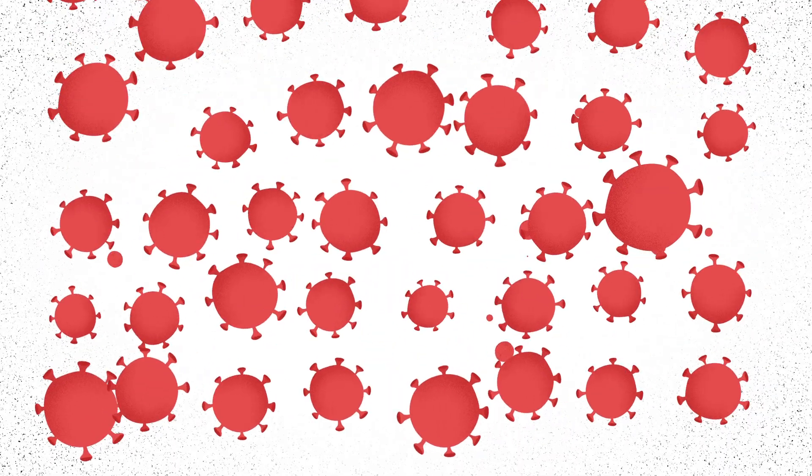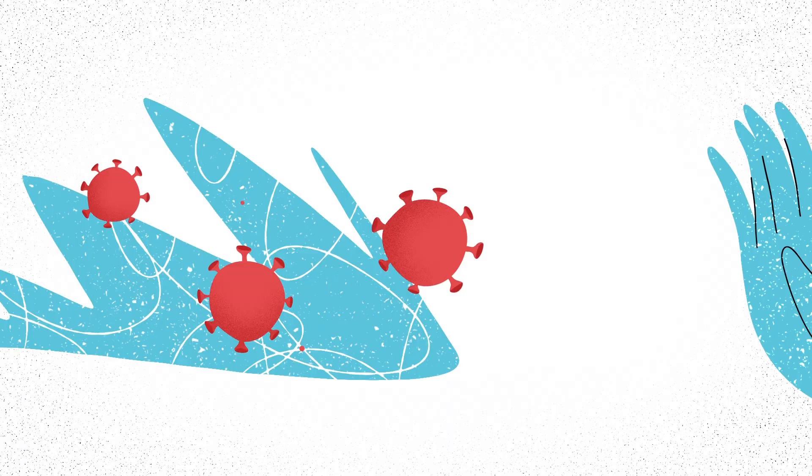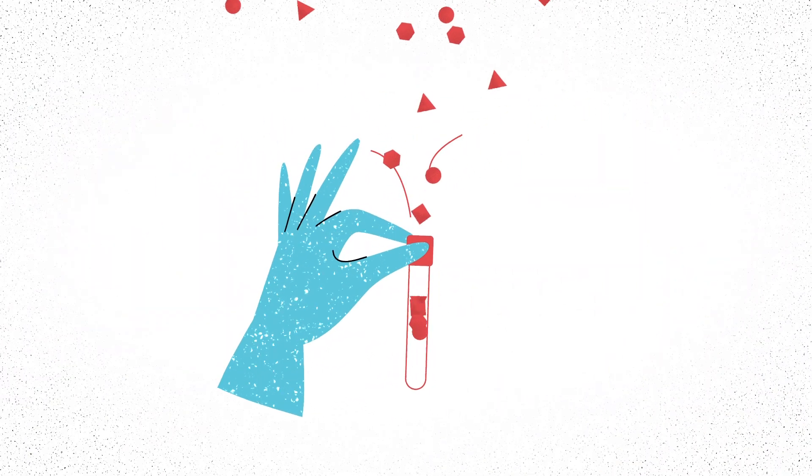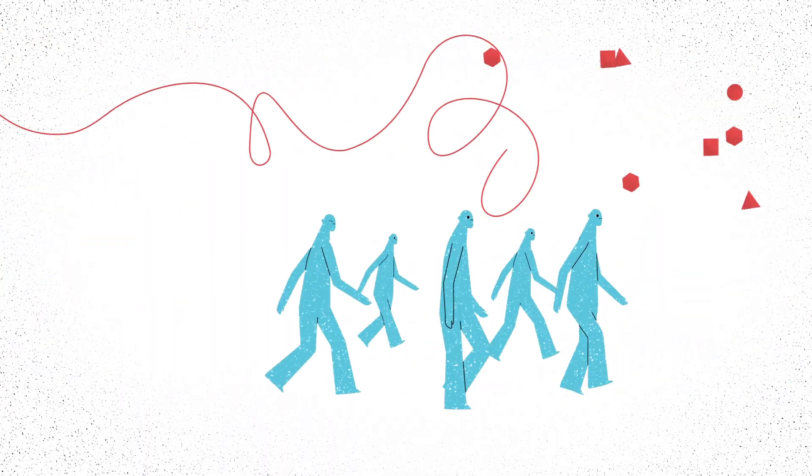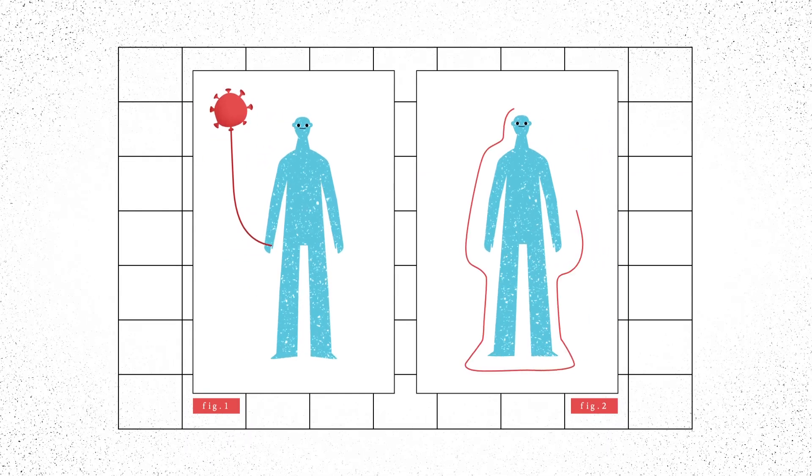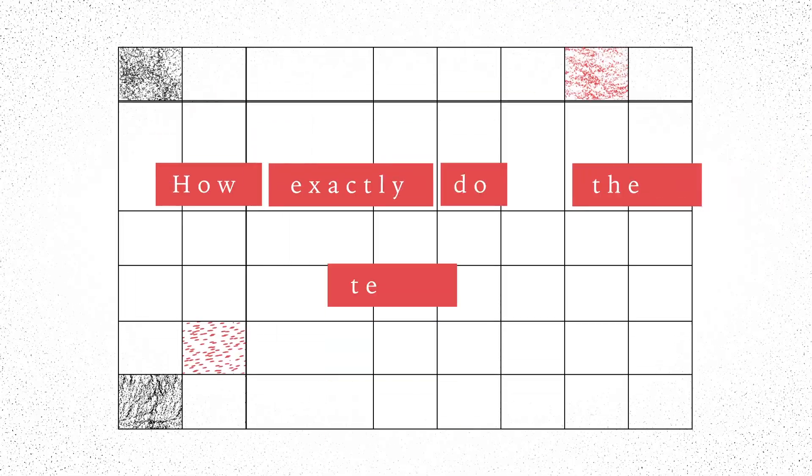A new virus emerges and spreads like wildfire. In order to contain it, researchers must first collect data about who's been infected. Two main viral testing techniques are critical. One tells you if you have the virus, and the other shows if you've already had it. So how exactly do these tests work?